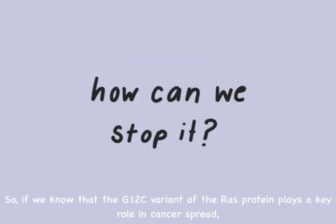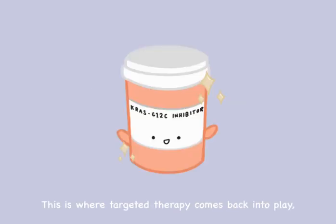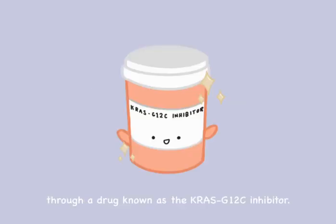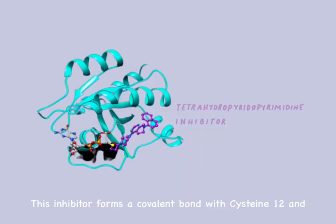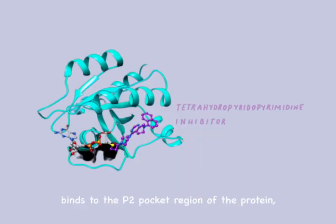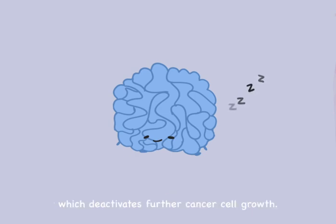So, if we know that the G12C variant of the Ras protein plays a key role in cancer spread, then how can we stop it? This is where targeted therapy comes back into play, through a drug known as the KRAS-G12C inhibitor. This inhibitor forms a covalent bond with cysteine G12 and binds to the P2 pocket region of the protein, locking it into an inactive GDP-bound state. In other words, the mutated Ras protein is forced back into an off state, which deactivates further cancer cell growth.